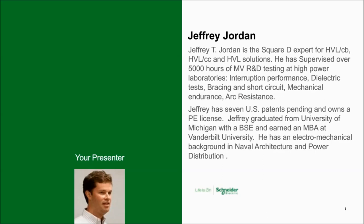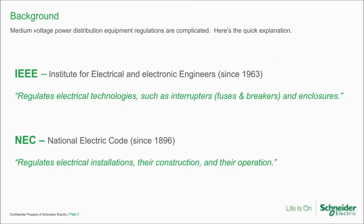It's best to start with a review of the IEC and NEC codes. If you've ever looked for medium voltage in the NEC, you probably came up short looking for the chapter. There are a few references, but not like there are for low voltage. The ANSI standards for medium voltage are produced by IEEE and are intended to regulate the electrical technologies, whereas the NEC code regulates their installations as they relate to selective coordination. So we're going to focus primarily on IEEE today.